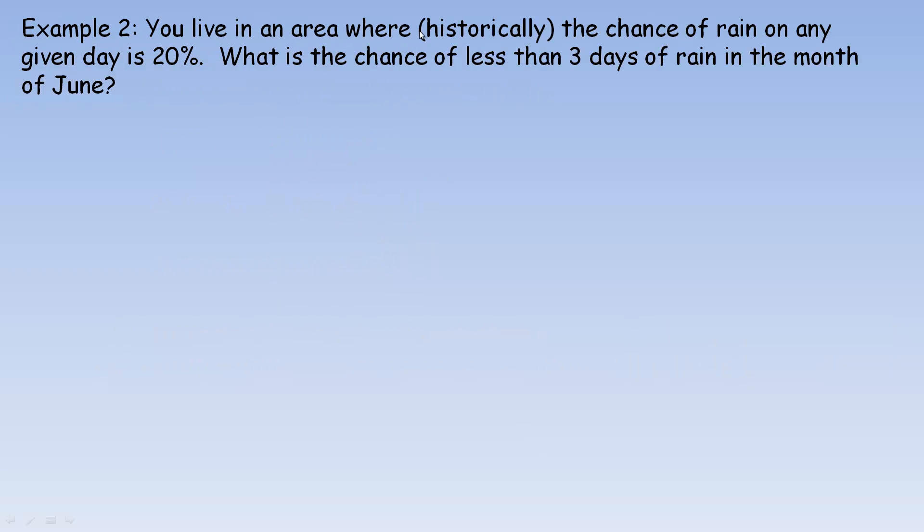In example 2, you live in an area where historically, and perhaps the local meteorologist has told you this, the chance of rain on any given day is 20%. So what you're asked to determine, what's the chance of less than 3 days of rain in the month of June? Well, June is 30 days, so each day would be a trial here. So n is 30. We're told that the probability of rain in the day is 20%. So p would be .2 or .20. To find q, we use 1 minus p. So that works out to 0.8. So that's a failure would be a day it didn't rain. Most people would think of that in the opposite way, but that's okay. So here's our formula. And we'll fill in n is 30, p is .2, and q is .8.